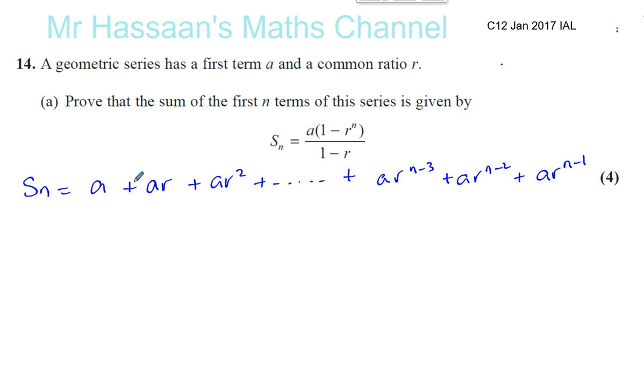So that gives you the sum of all the terms. Now, in order for us to find an expression for the sum of the first n terms in this form, what we can do is take this equation and call it equation 1, and we can multiply equation 1 by R.